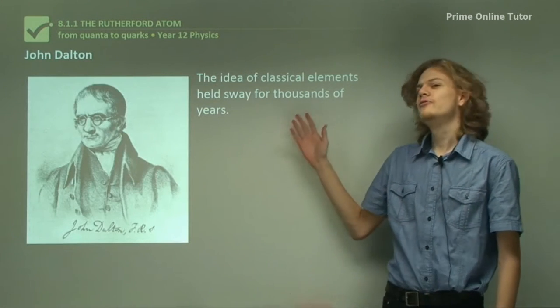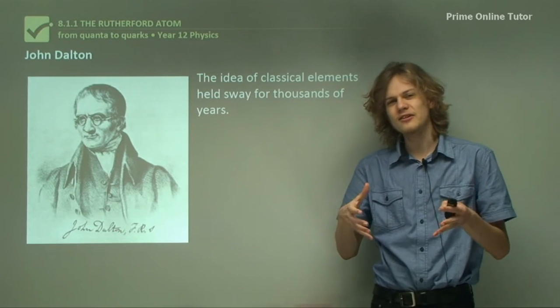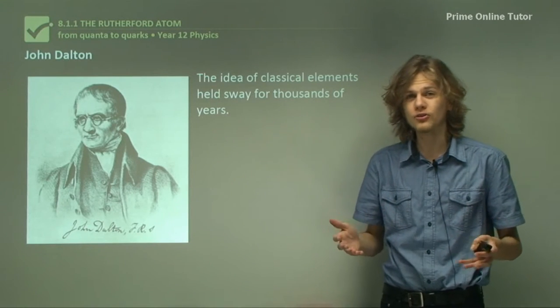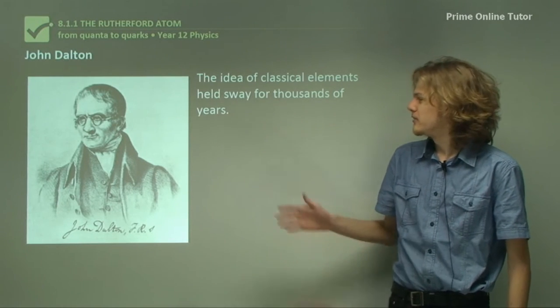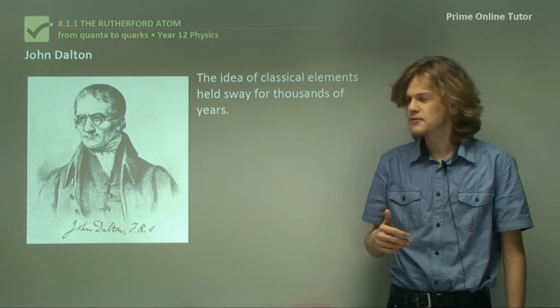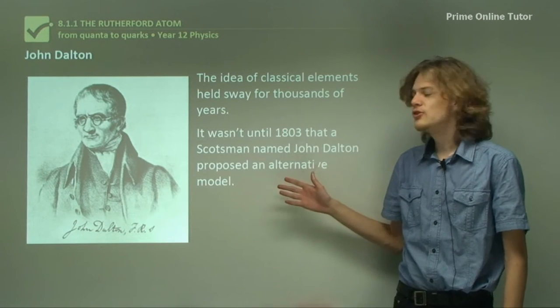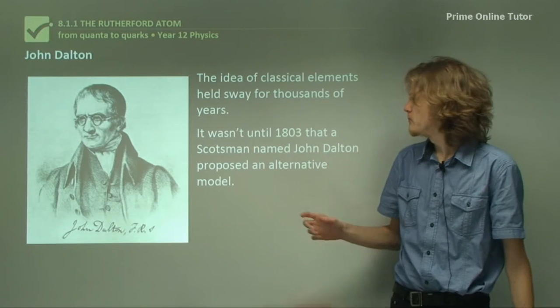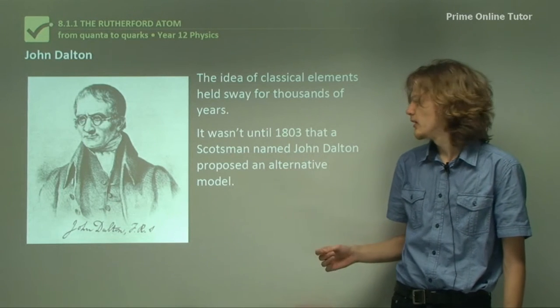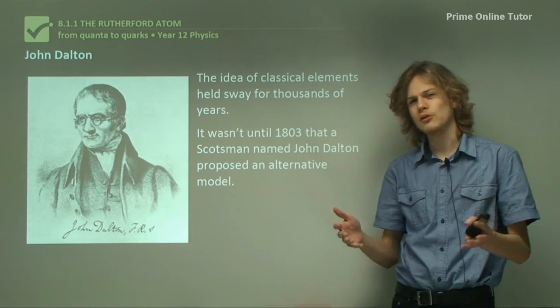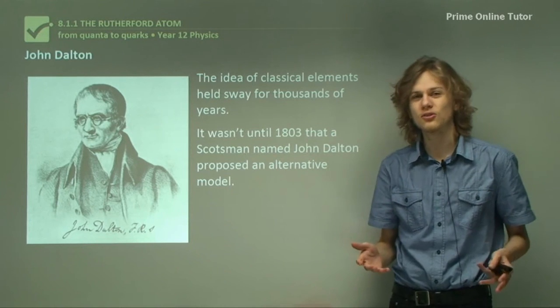So the idea of the classical elements was the main idea of how matter works for a very long time. And this fellow here is the one who changed things. So in 1803, the turn of the 19th century, a Scotsman named John Dalton proposed an alternative model that wasn't based on the four classical elements.